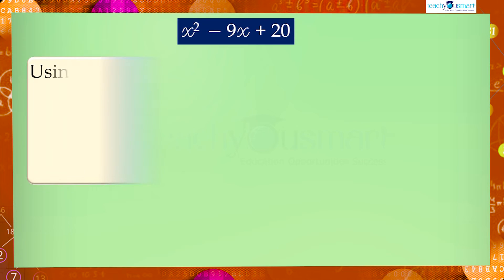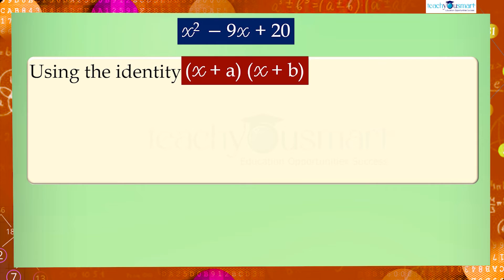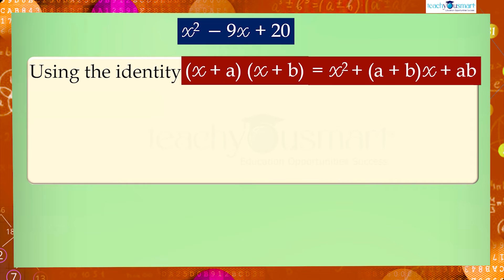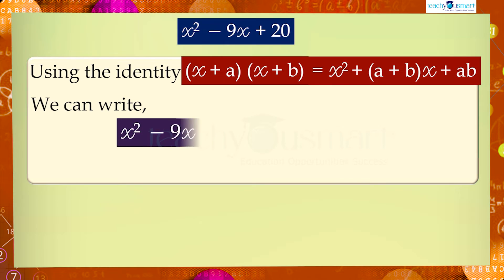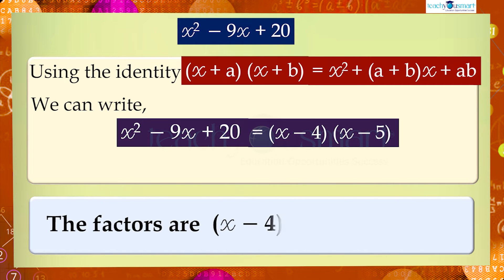Using the identity (x + a)(x + b) = x² + (a + b)x + ab, we can write x² − 9x + 20 = (x − 4)(x − 5). Therefore the factors are (x − 4) and (x − 5).